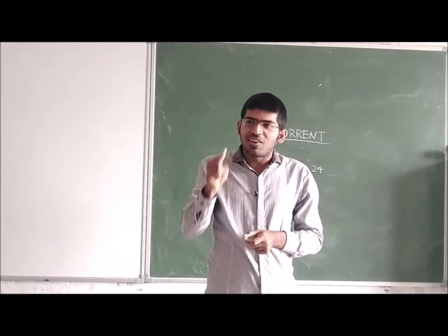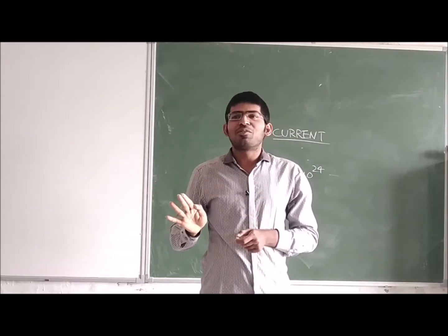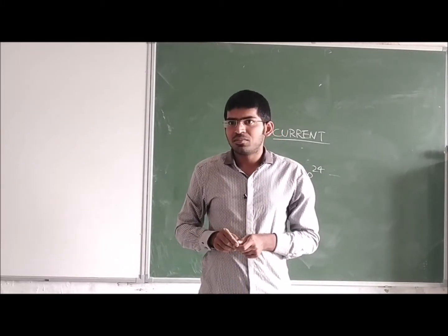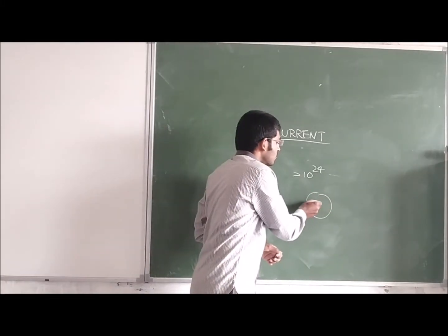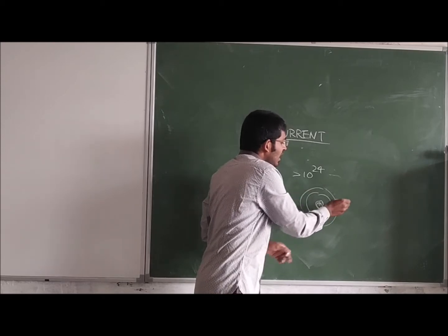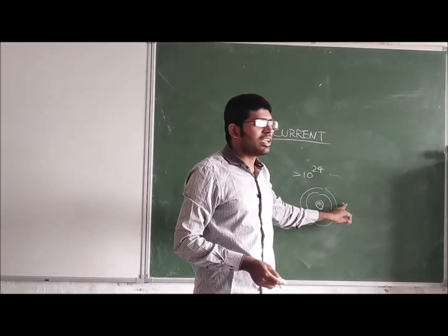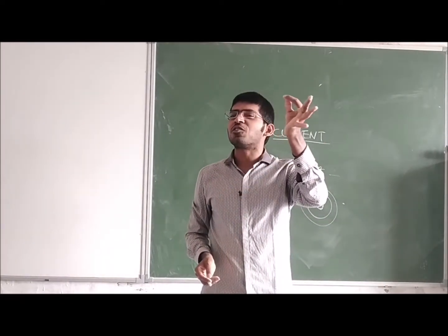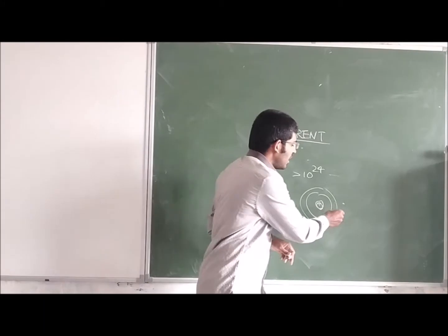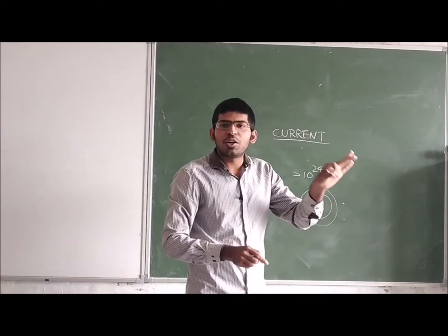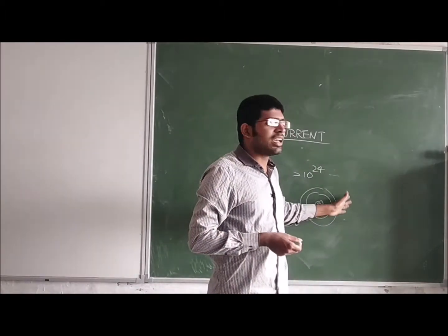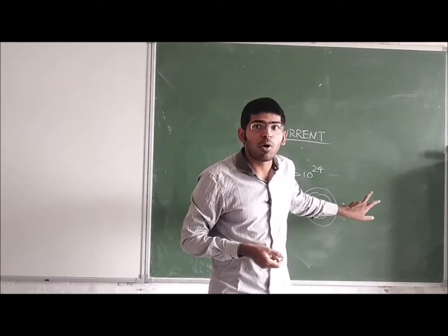These electrons are revolving — there is no doubt. But these electrons are revolving not for us; they are revolving for the nucleus. If an electron comes out of the atom, this electron is called a free electron. This free electron is free from any nuclear force, and it randomly moves. At some point of time, this electron again goes into the atom and again becomes a bounded electron.